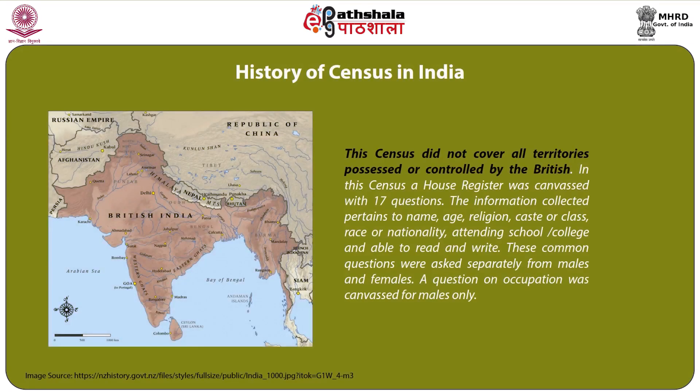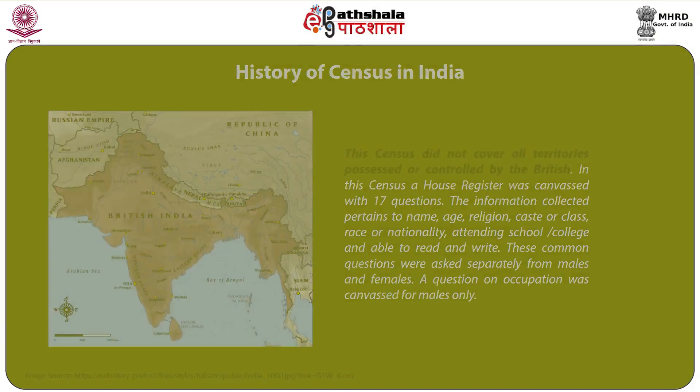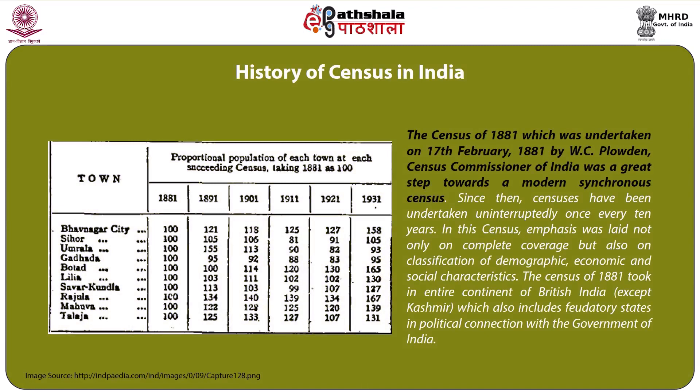The 1872 census did not cover all territories possessed or controlled by the British. In this census, a house register was canvassed with 17 questions. The information collected pertained to name, age, religion, caste or class, race or nationality, attending school or college, and ability to read and write. These common questions were asked separately for males and females, while a question on occupation was canvassed for males only. The census of 1881, undertaken on 17th February 1881 by W.C. Plowden, the census commissioner of India, was a great step towards a modern synchronous census.